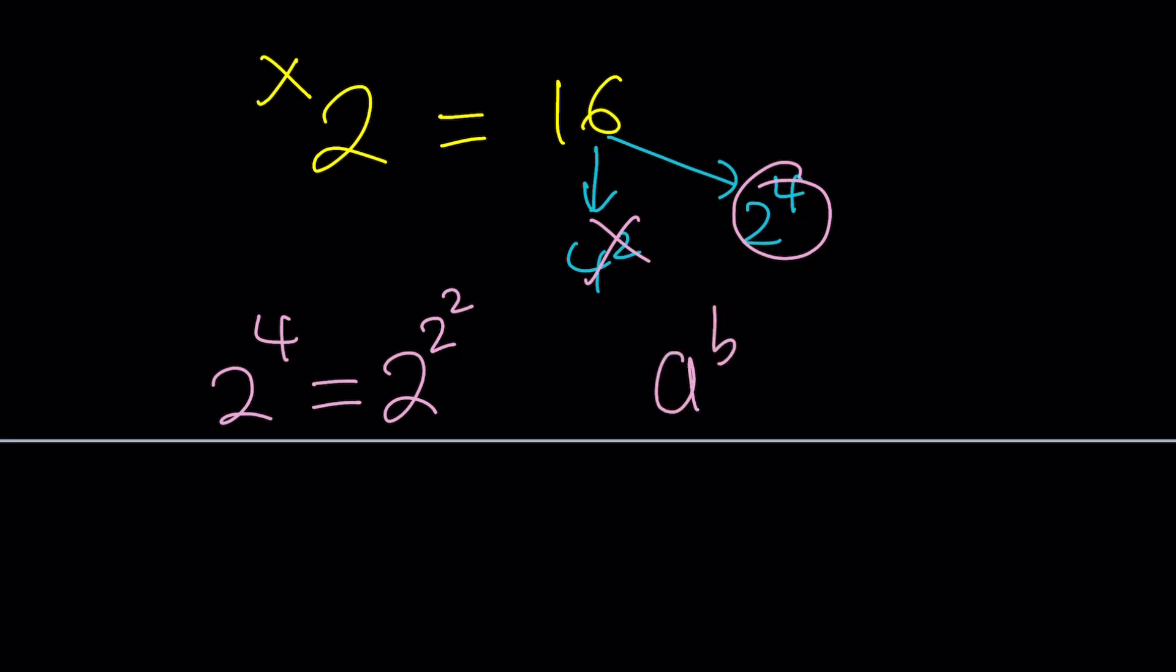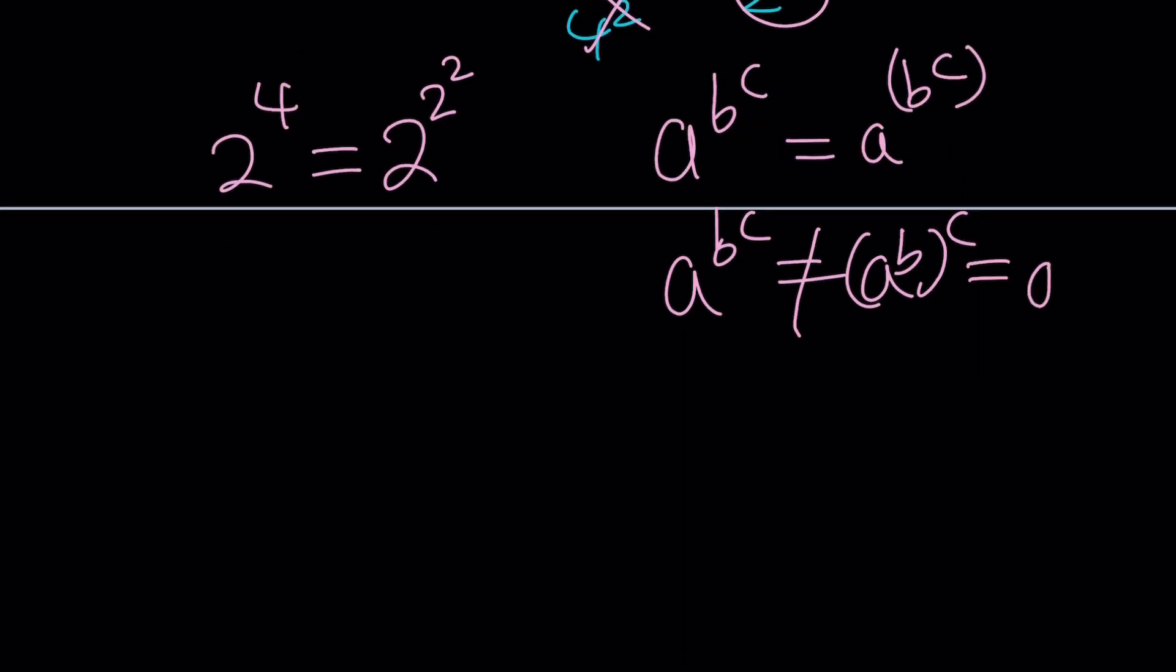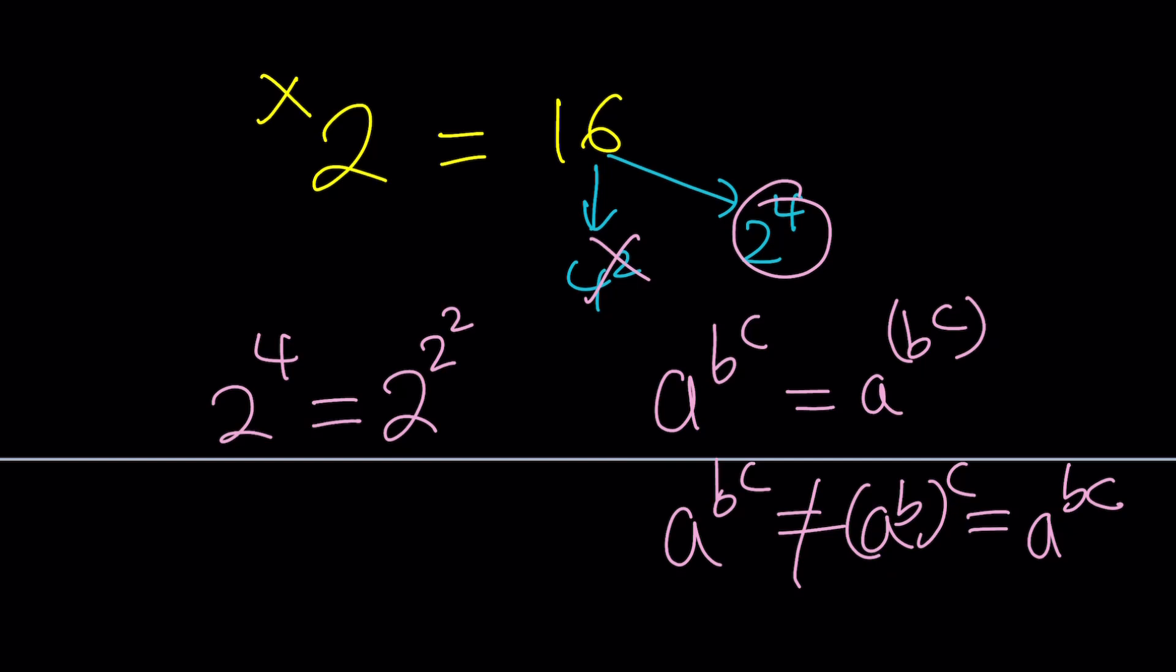Remember, when you write a to the b to the c, it just means this, not this, right? Because this means a to the power bc. So, instead of writing it as bc, why would I write it as b to the c? I mean, if bc is equal to b to the c, then they're equal. But that's a specific, special scenario. It's not, in general, true.